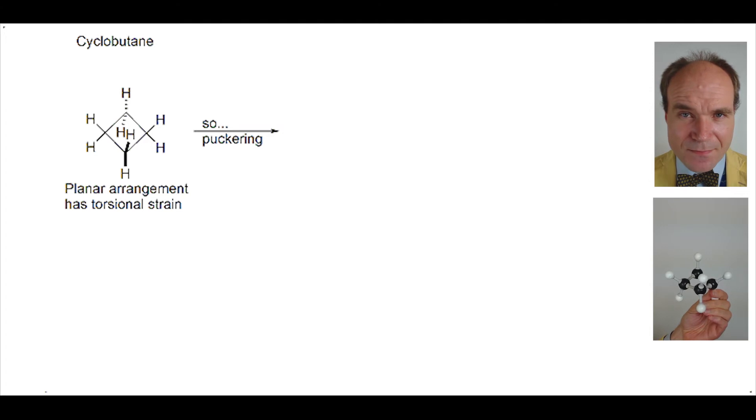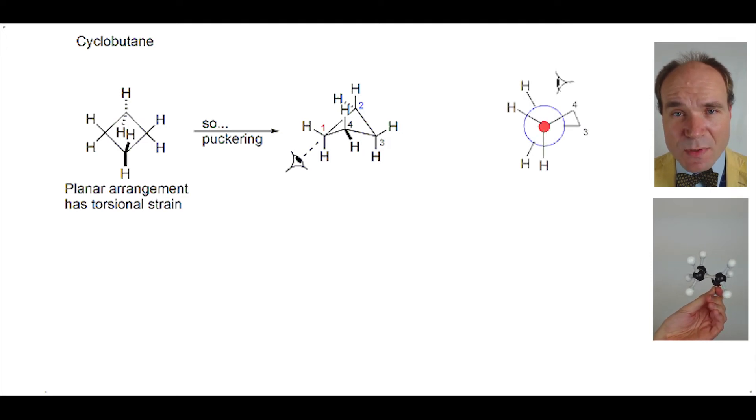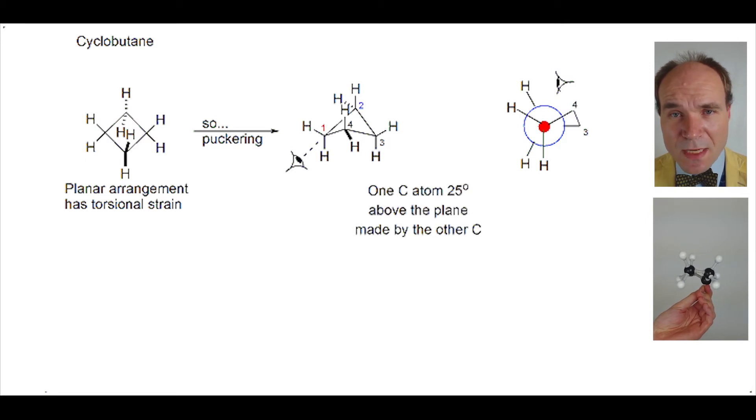Carbon four is raised upwards whilst carbons one, two, and three remain in about the same position. If we view the molecule from carbon one looking down the carbon one to carbon two bond and imagine that in a Newman projection form, we have carbon four being raised up by about 25 degrees compared to the plane created by carbons one, two, and three.